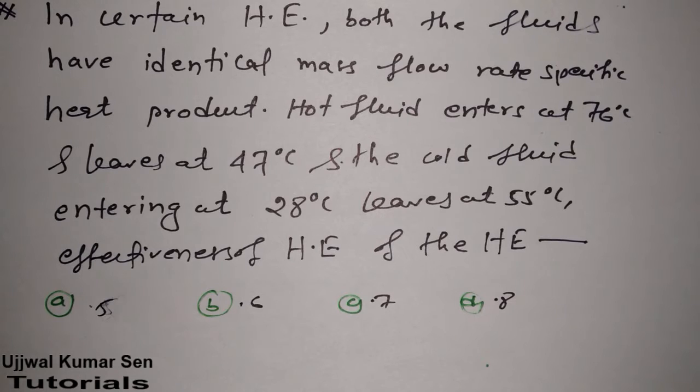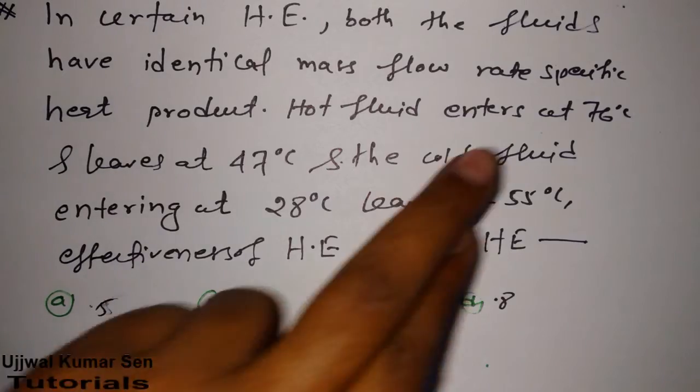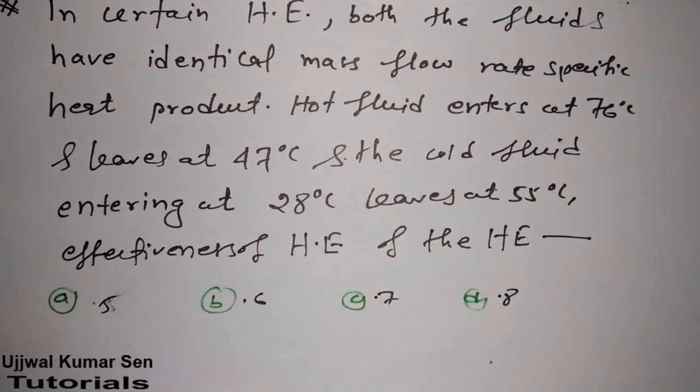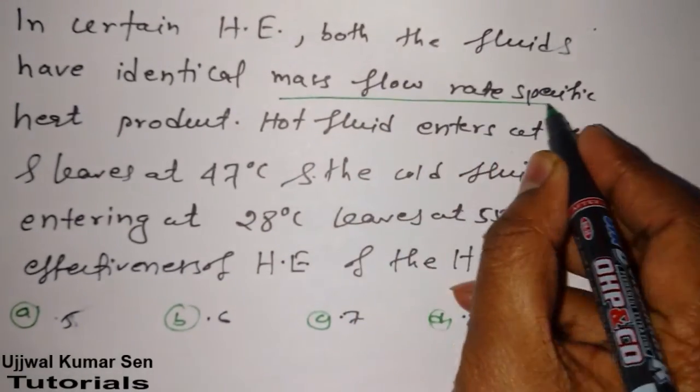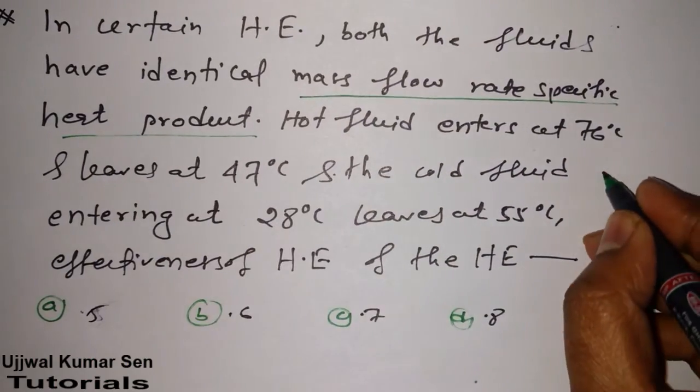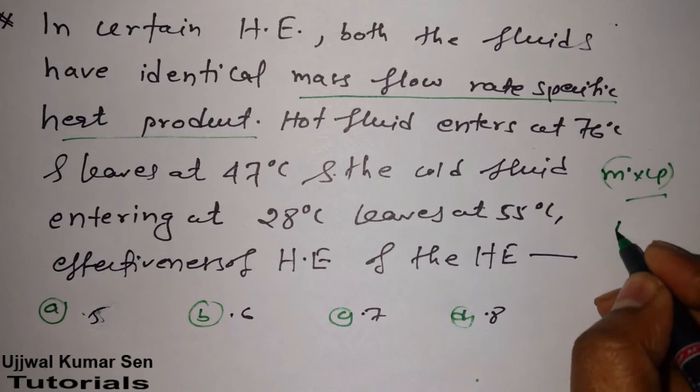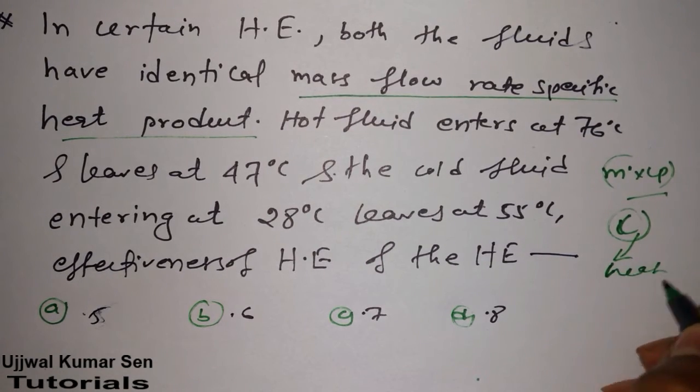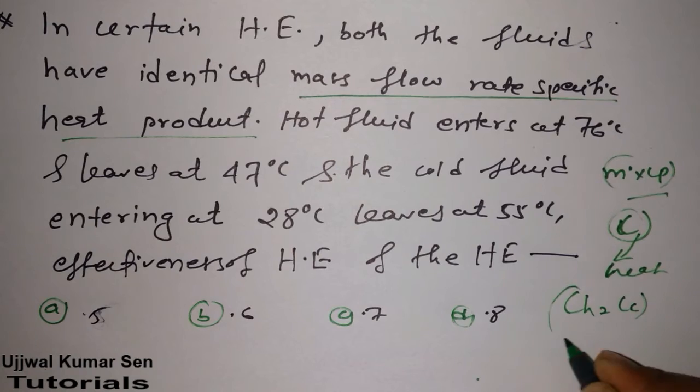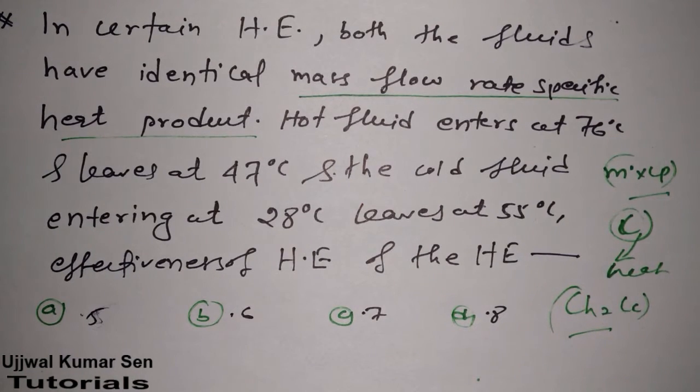Both fluids have identical mass flow rate and specific heat product. Hot fluid enters at this temperature and the mass flow rate specific heat product means heat capacity. So CH equals CC - cold fluid heat capacity equals hot fluid heat capacity. This is one of the most important conditions.